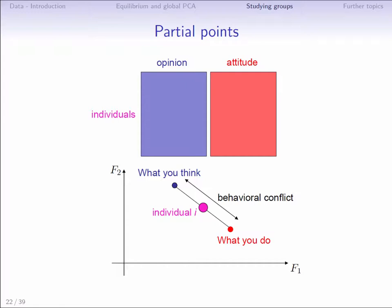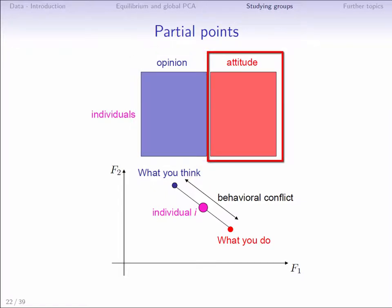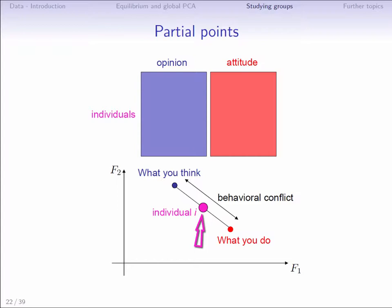Take the following example: individuals were first questioned on several issues related to their opinions, then interviewed on several issues related to their behavior. These two sets of questions form two groups of variables in the MFA, which provides a representation of the individuals as seen by all variables — the mean point here in purple. We can also represent partial points corresponding to an individual seen only in terms of the opinion variables and then only in terms of the behavioral variables. If the two partial points are close to each other and therefore close to the mean point, then the individual behaves in accordance with their own opinions; whereas if the partial points are far apart, the individual doesn't behave in accordance with their opinions.